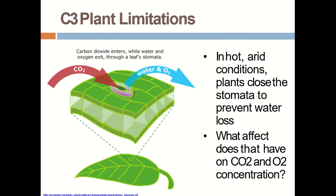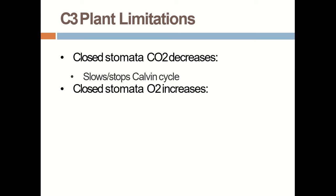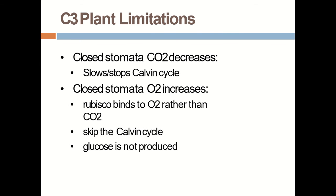What effect does this have on CO2 and oxygen concentration? With closed stomata, CO2 concentration decreases, which means the Calvin cycle is stopped. Whereas in increased oxygen concentration, rubisco binds to oxygen, skips the Calvin cycle, and glucose is not produced.